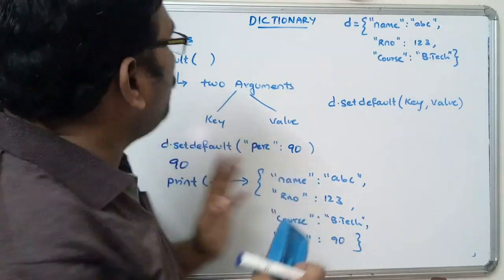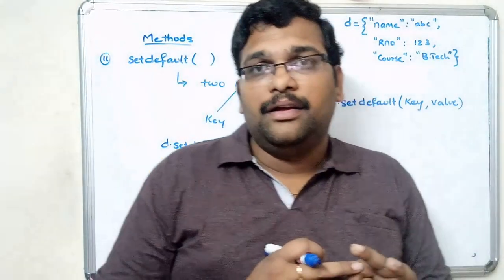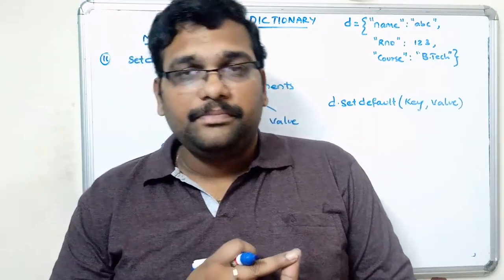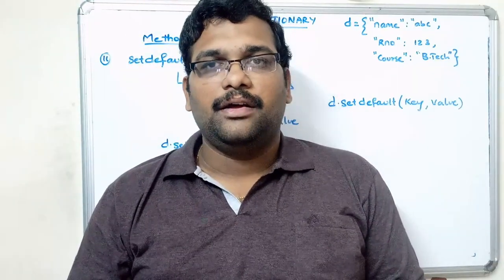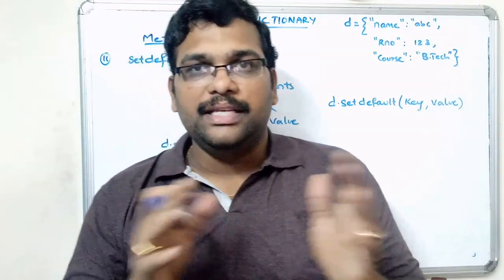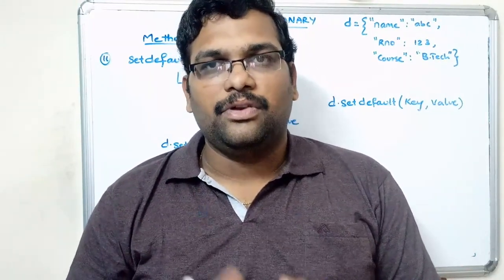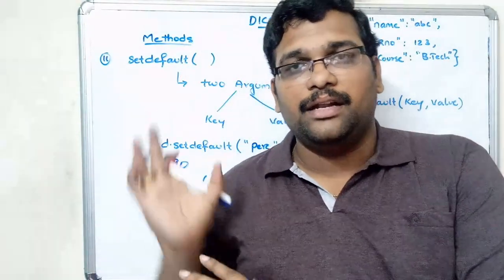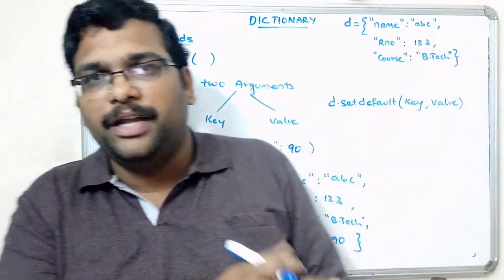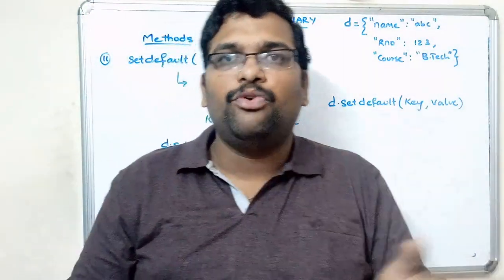So these are the dictionary methods we've covered: copy, clear, items, keys, values, get, pop, popitem, update, fromkeys, and setdefault. We've seen the syntax and working of all these methods. Now we'll see the implementation — how they actually work — using the Python interpreter.